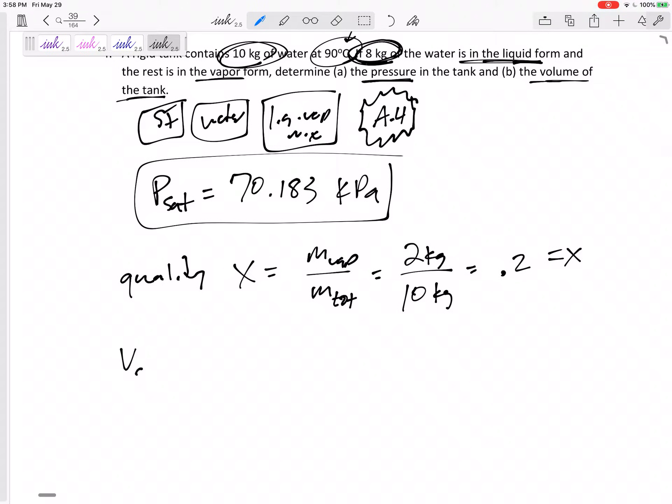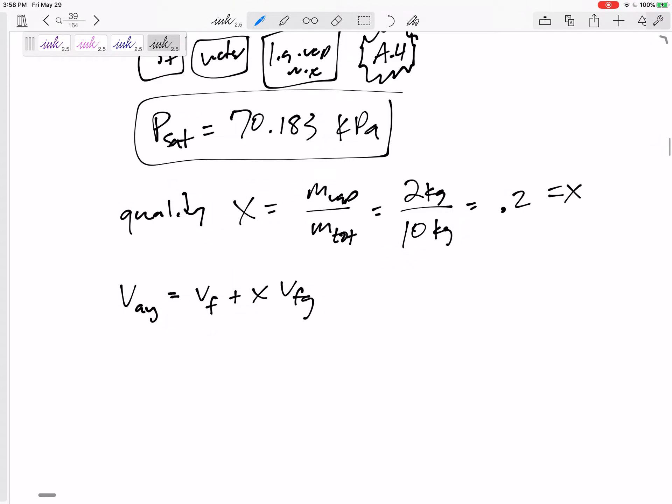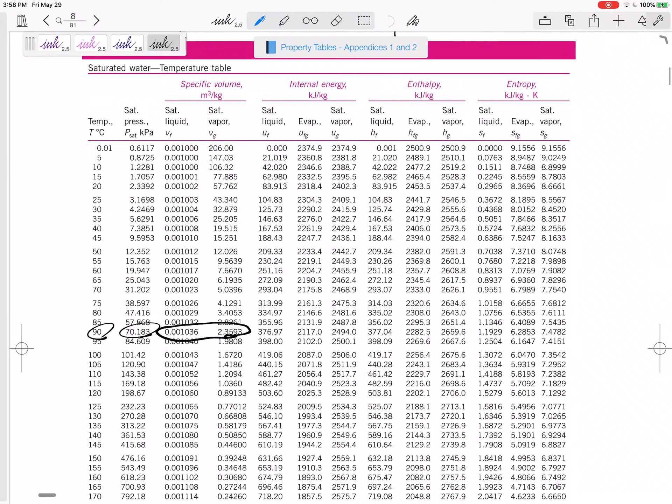Now, I bet I can get the average specific volume. It asked for the total volume, but first I'm going to get specific volume. Average specific volume is VF plus X VFG. So the average would be VF. I go back to the property tables. VF is 0.001036.